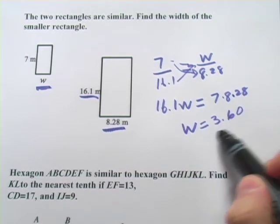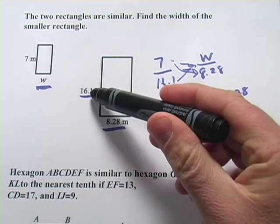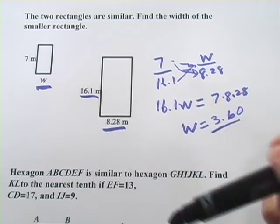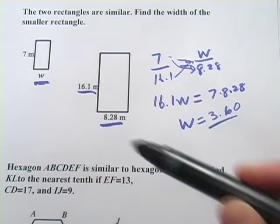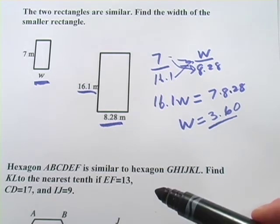And then when I come up with a number, I like to go back and ask myself, does this make sense? Here we have 16, a little over 16, and a little over 8. So the width is about half. Here we have 7 and we have a little over 3.5, so again the width is about half. That does seem to make sense, so looks like we probably have the right answer there.